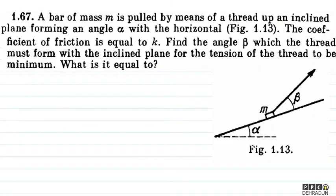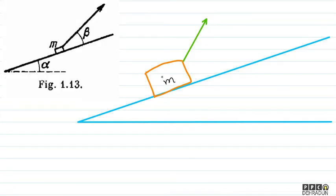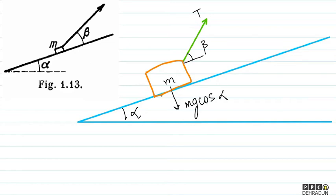So, here we have an inclined plane making an angle alpha with the horizontal, and here we have a mass M bar. We have a thread through which we pull such that the thread is inclined at an angle beta with the inclined plane. We have to find angle beta such that we can minimize the tension. Now, if we make the free body diagram of this bar, we will show one force: Mg cos of alpha, which is perpendicular to the inclined plane.